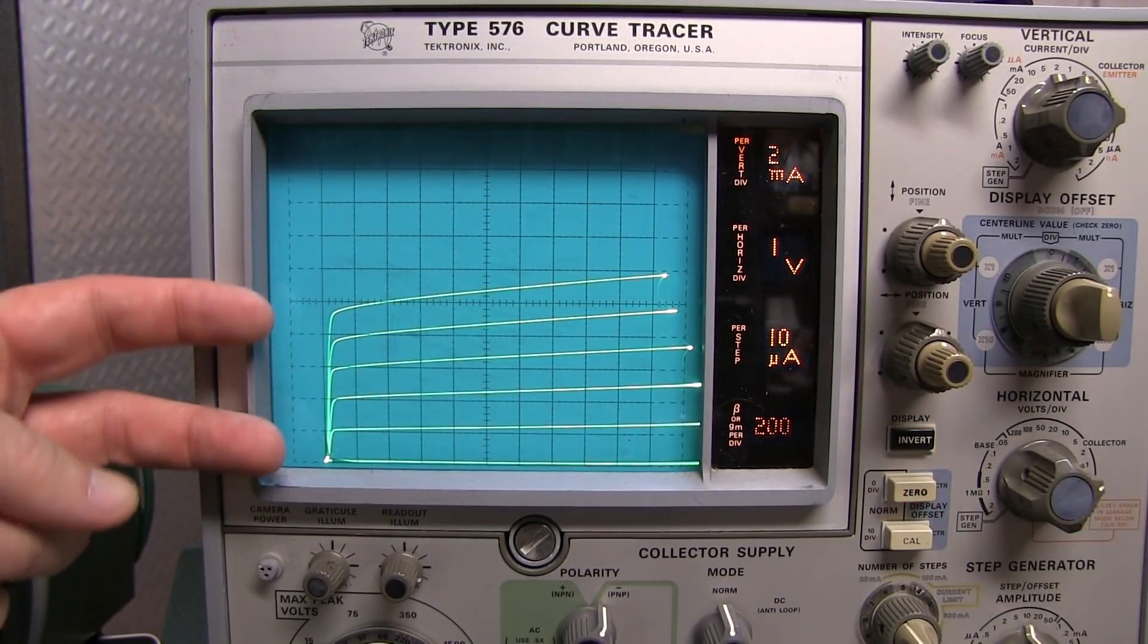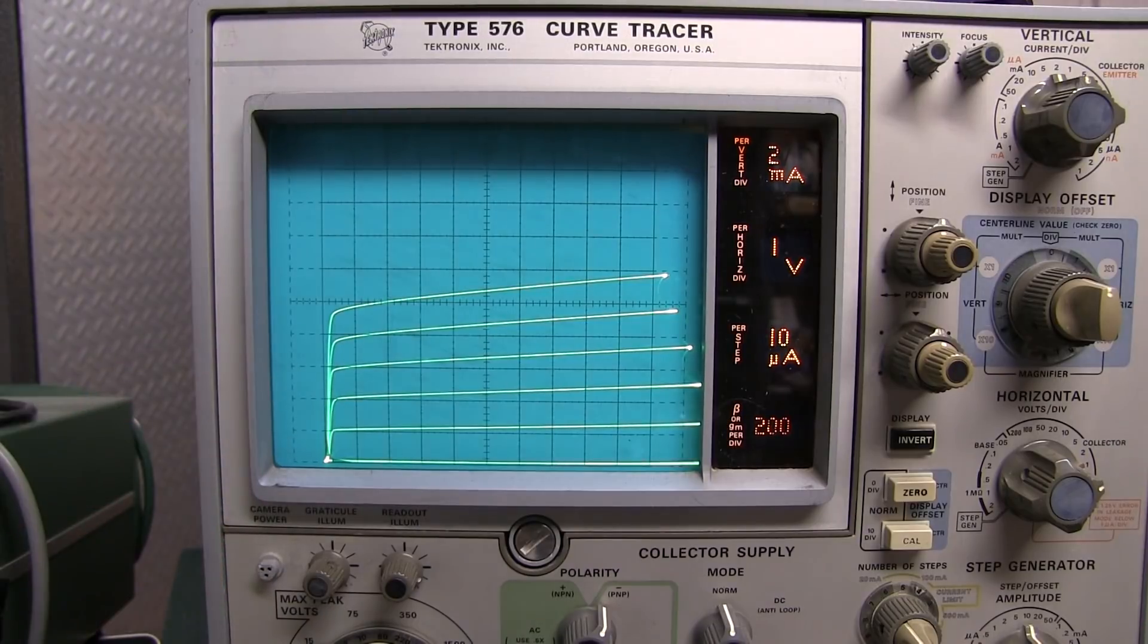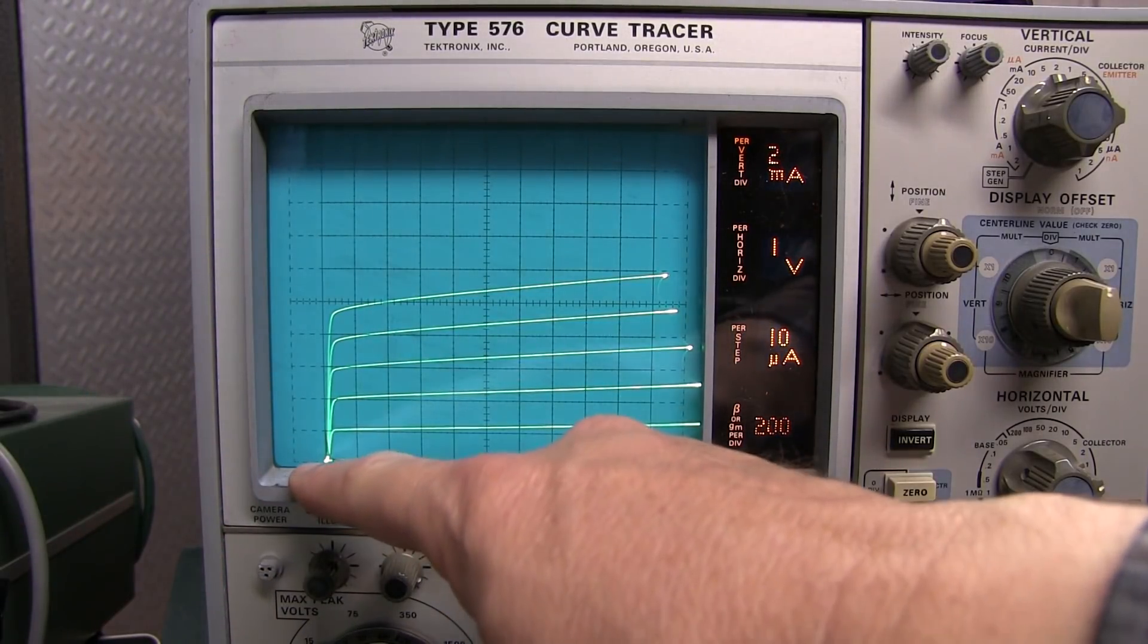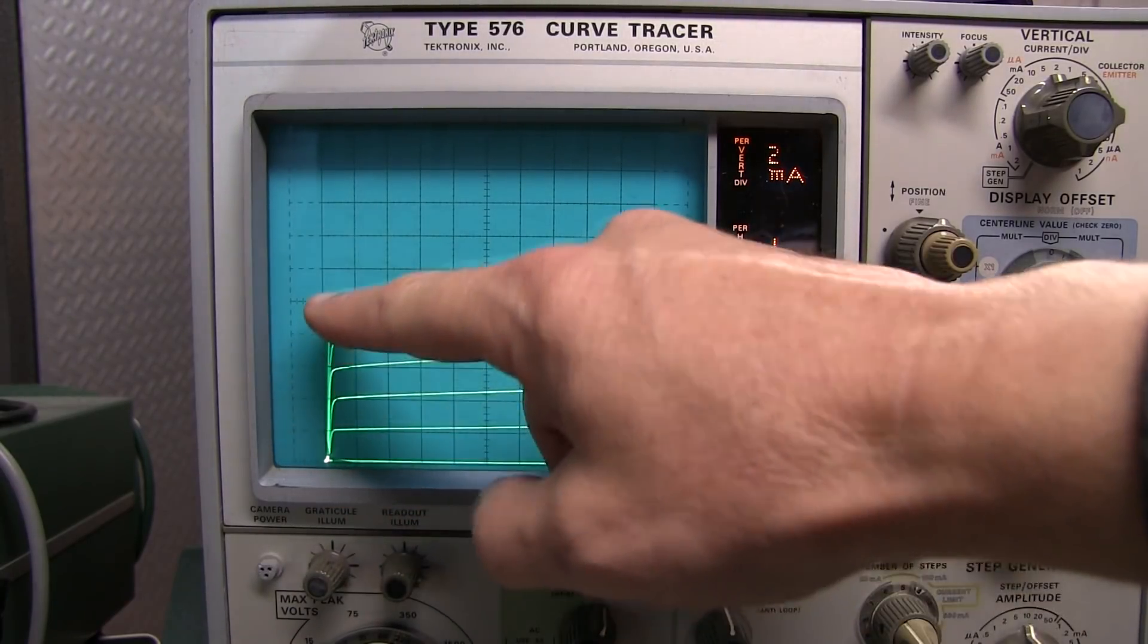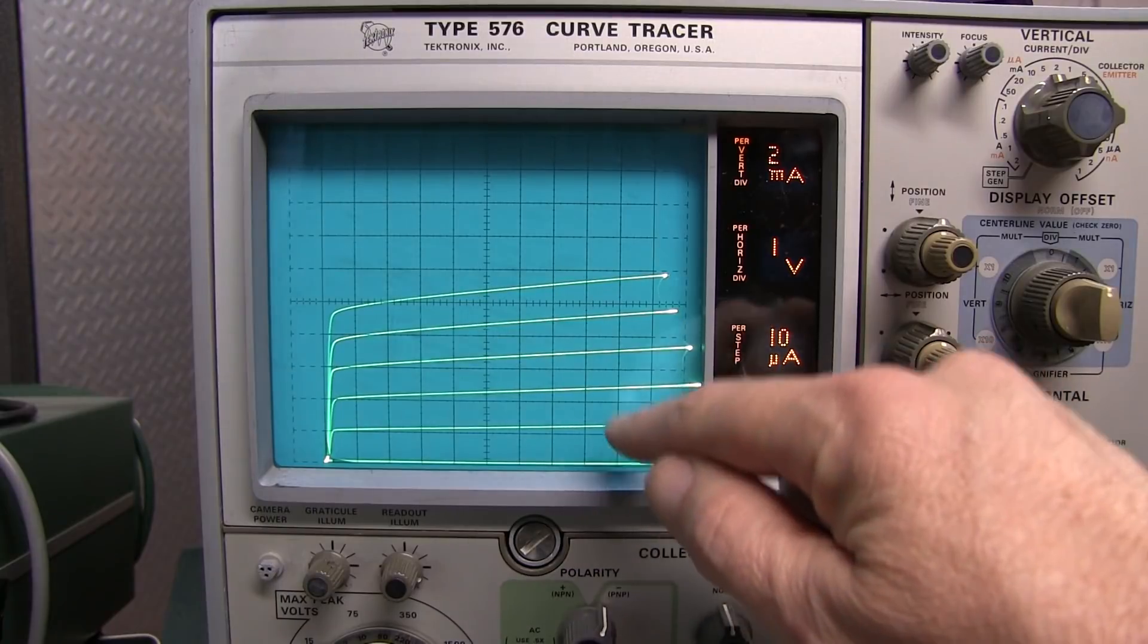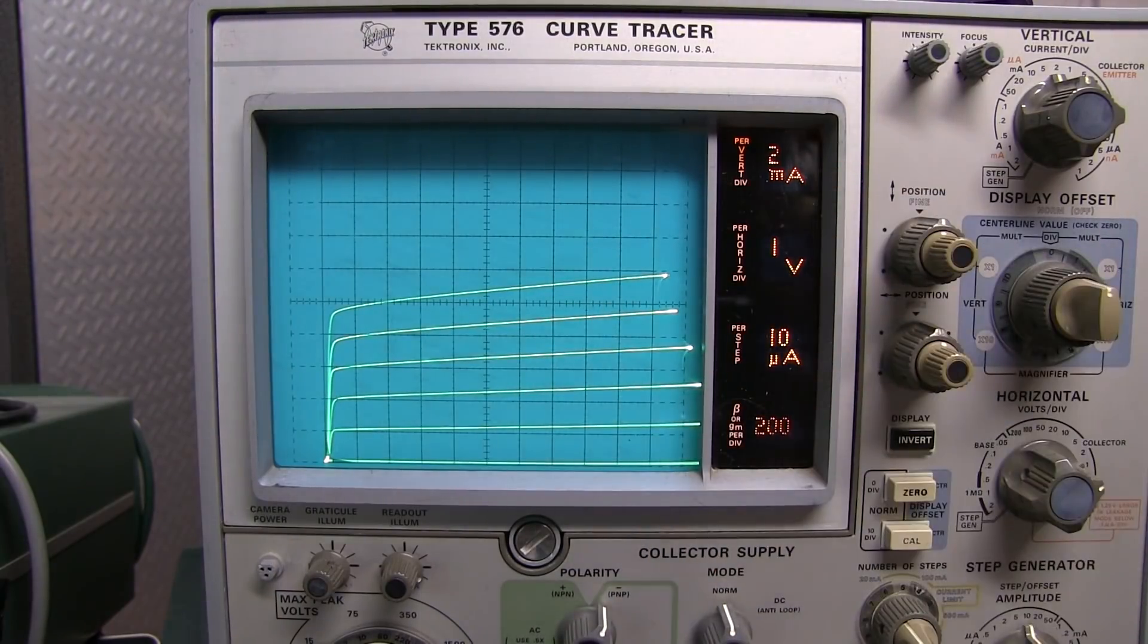Now this is the format that most people are used to seeing for the characteristic curves of a bipolar transistor. This axis here is collector emitter voltage going this way, and this is collector current going that way. And each of these curves is at a constant base current.